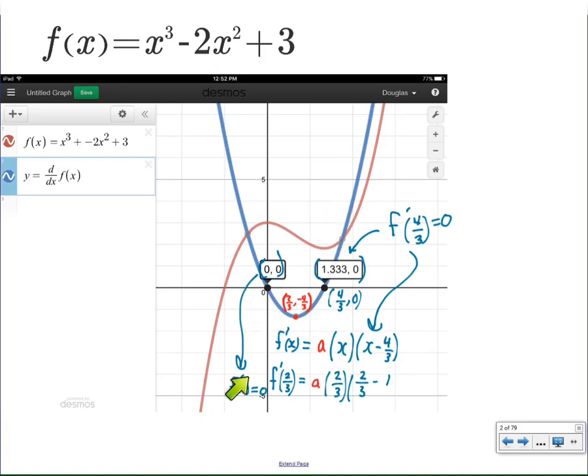Here, I know that when f prime of zero equals zero, then we have x as one of the factors, because if I put zero in there, it's good to go.